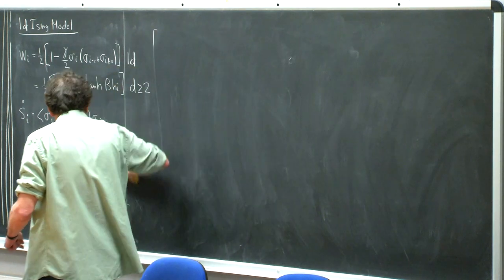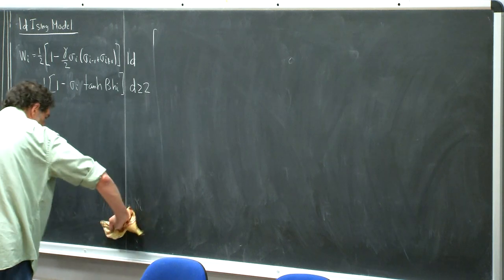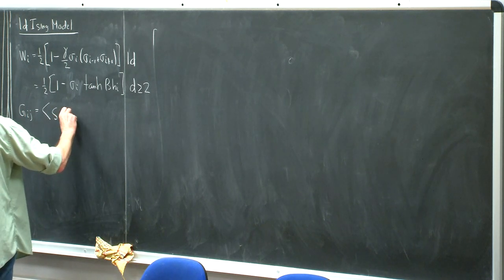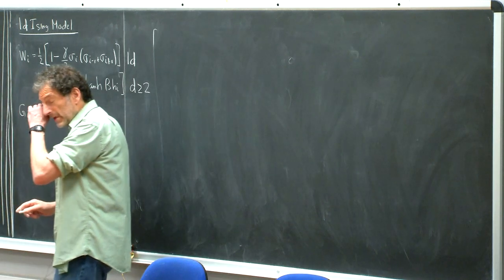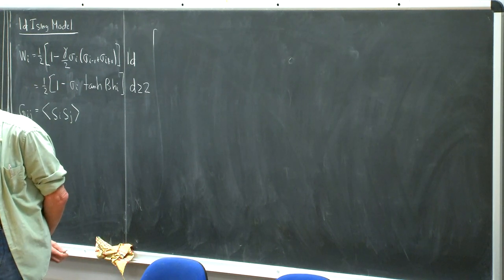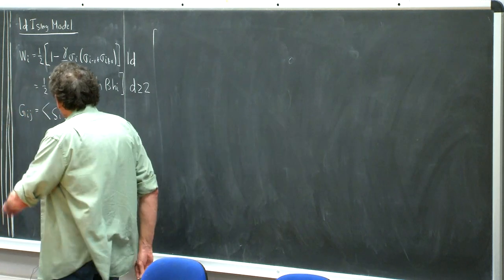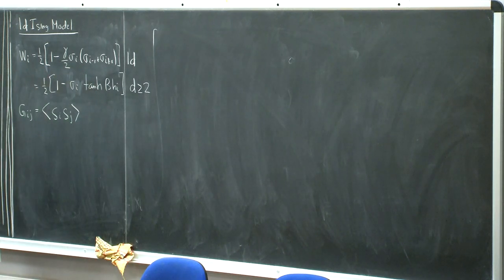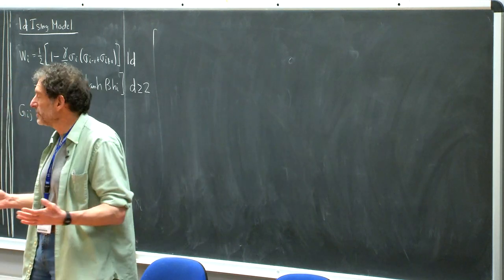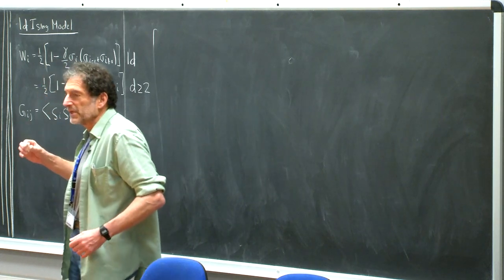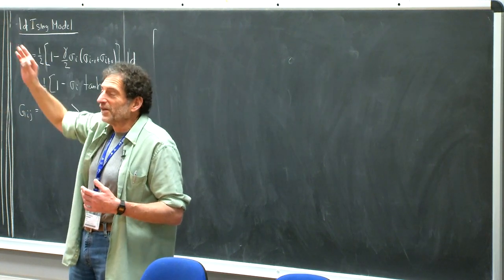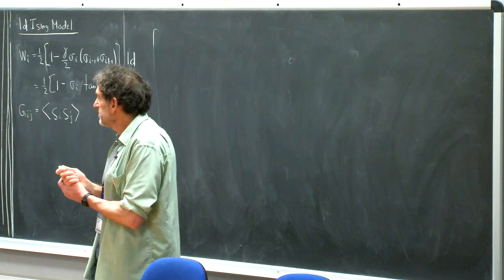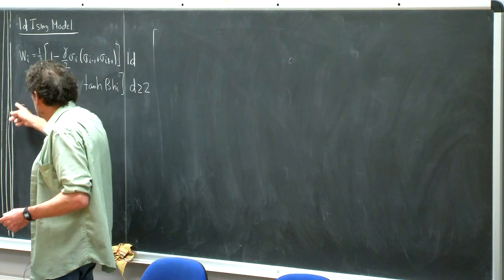The two-spin correlation function G_{ij} is defined as the thermal average of s_i s_j. This tells you whether two spins some distance apart are correlated. If correlated, there's some ferromagnetic order propagating through the system. If the thermal average is close to zero, it means the spins are uncorrelated — ferromagnetic order hasn't transmitted through the system.